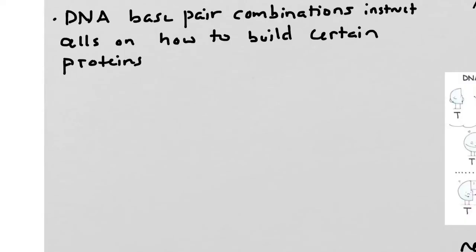The way that this works is DNA is essentially a set of instructions for how to build certain proteins. So depending on the base pairs that you have, you might have the instructions for building black-haired proteins, or you might have the combination of base pairs that codes for building brown hair proteins.